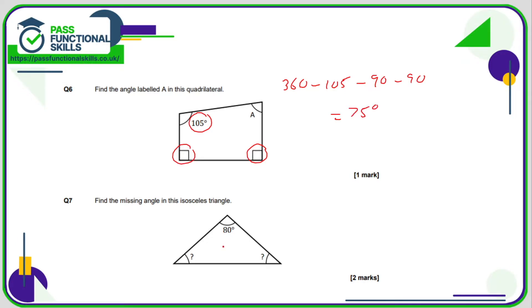Question seven - the key word is isosceles. These two sides are the same length, meaning these two angles are also the same. The angles add up to 180 in total. If we take away 80, we've got 100. Since these angles are the same, divide 100 by 2. Each angle is 50 degrees.